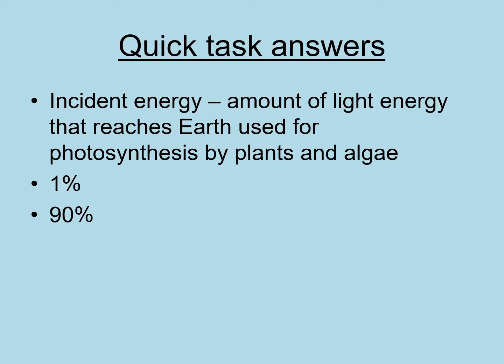Here are your answers for the quick task. Incident energy is the amount of light energy that reaches Earth and is used for photosynthesis by plants and algae — that is 1%. The amount of energy wasted approximately at each trophic level is 90%. Remember that can vary widely, but generally speaking about 90% is lost.